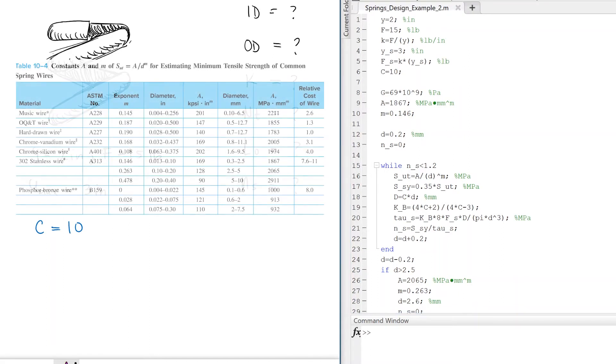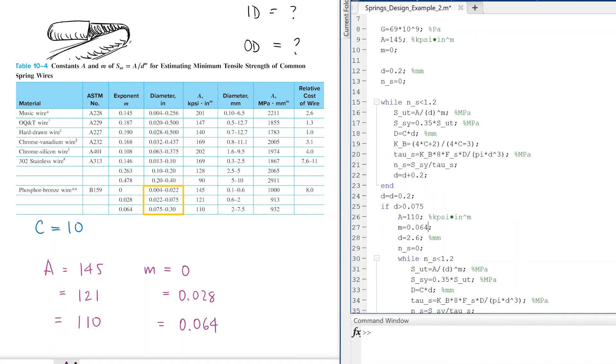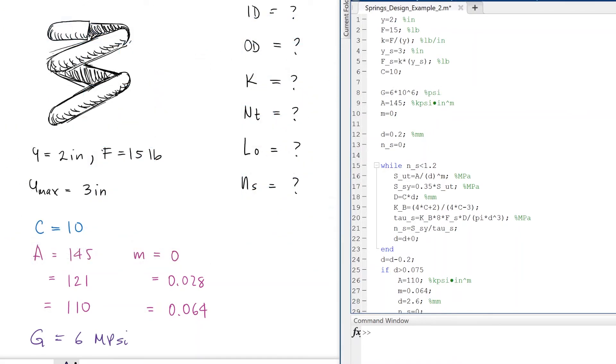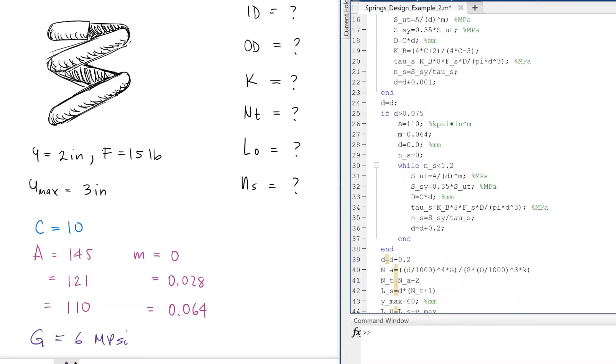The A coefficient and the M exponent for phosphor bronze wire would have different values depending on the diameter of the wire. The shear modulus would be 6 MPSI and we would increase the diameter gradually, this time not in intervals of 0.2, from its lowest possible value.